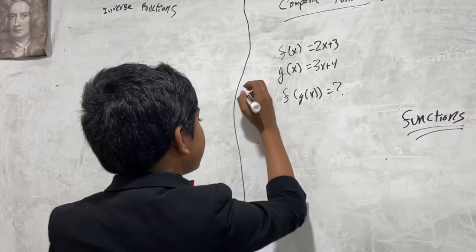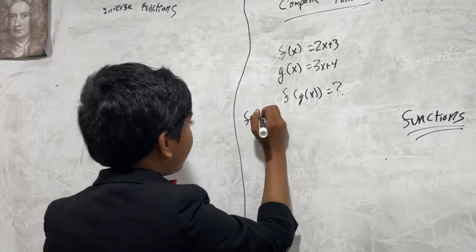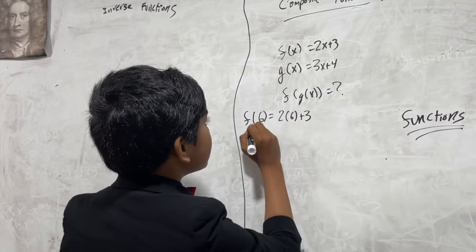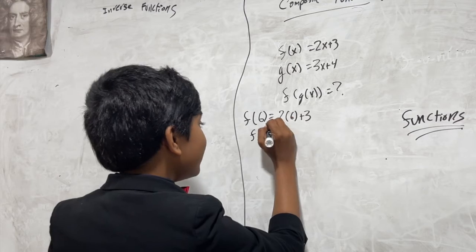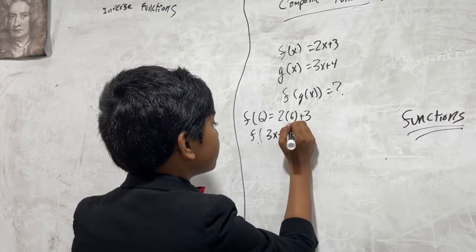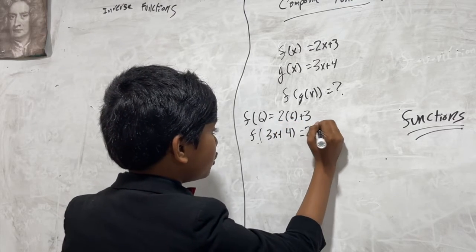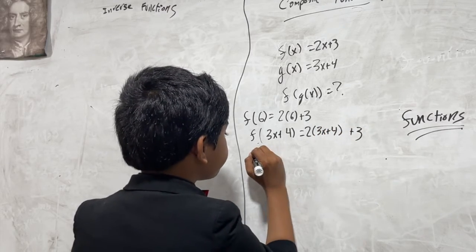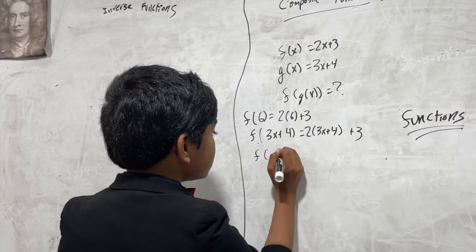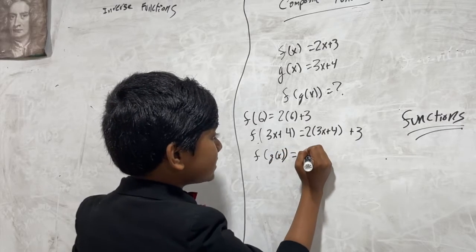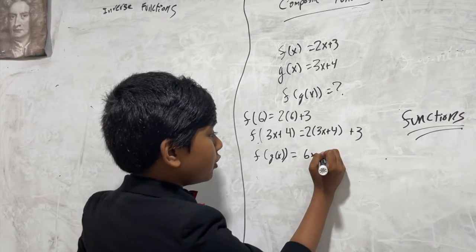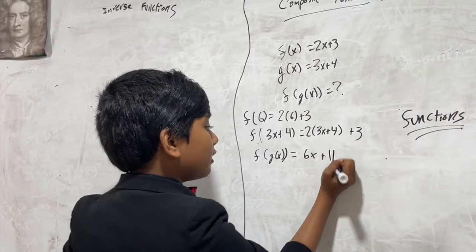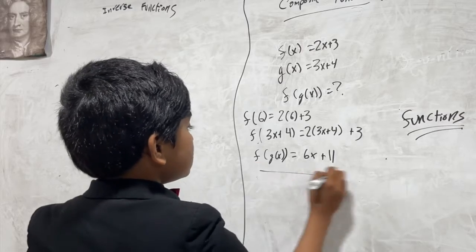If f(6) is 2 times 6 plus 3, then f(g(x)) or f(3x+4) should be 2 times what you put in the parentheses plus 3. So f(g(x)) = 2(3x+4) + 3. Now all you need to do is simplify, which is basic algebra.